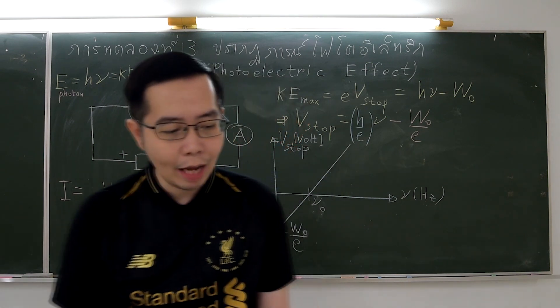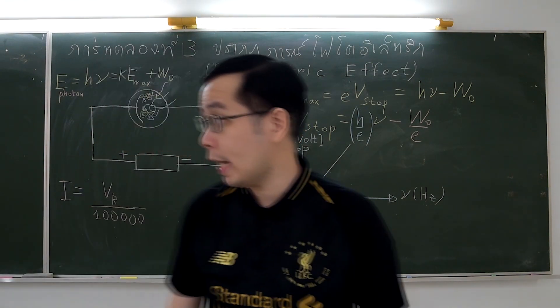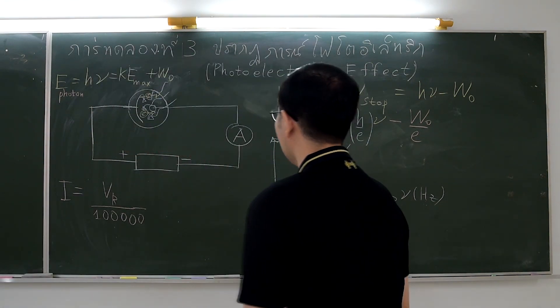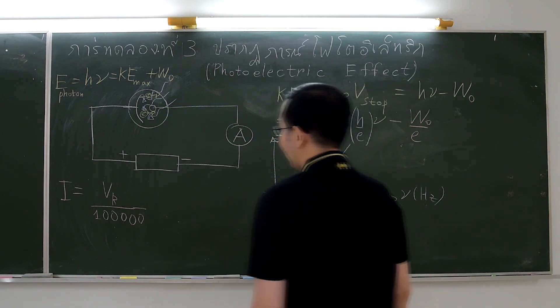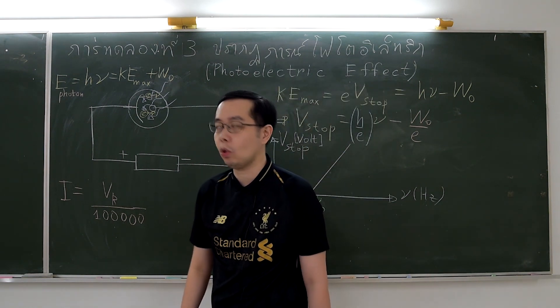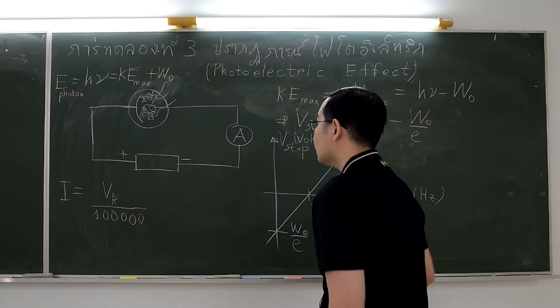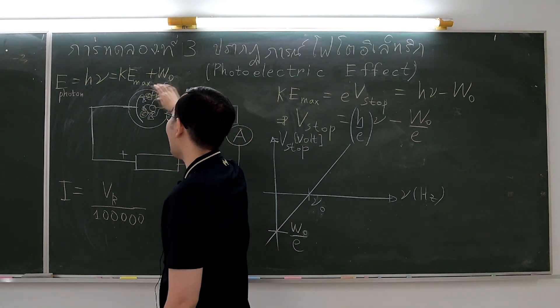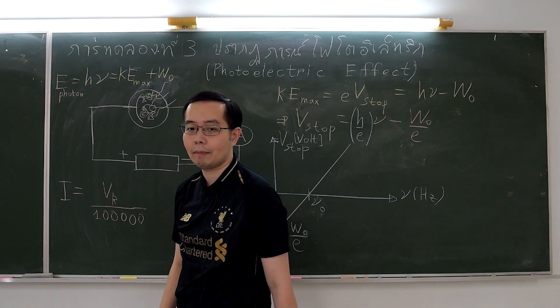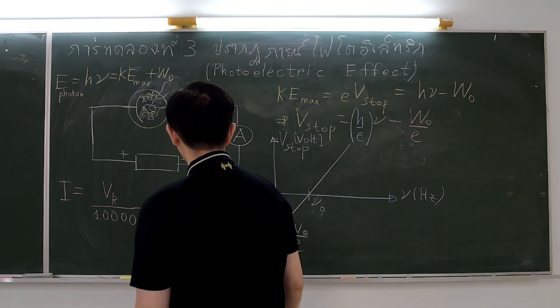At first, the photoelectric experiment was done by Heinrich Hertz in 1887. He found that electrons can be emitted from metal surfaces if illuminated by light and cause current in the circuit.